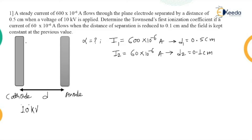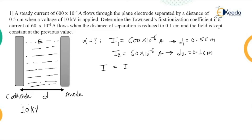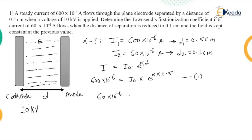Considering the electric field constant between the electrode contacts, we use Townsend's first ionization equation: I = I₀ · e^(αd). For the first current: I1 = I₀ · e^(α × 0.5) — equation 1. For the second: I2 = 60 × 10⁻⁶ = I₀ · e^(α × 0.1) — equation 2.